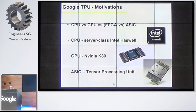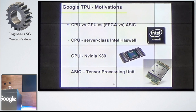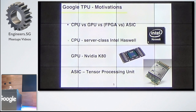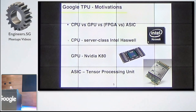From a research point of view, it's really a comparison between CPU and GPU versus ASIC. They compare a server-class Intel processor and the NVIDIA K80. And they had the latest development, which is this Tensor Processing Unit. Overall, the paper presents the TPU but mainly focuses on the performance comparison.